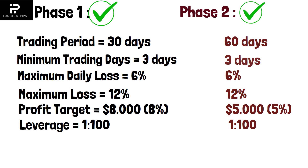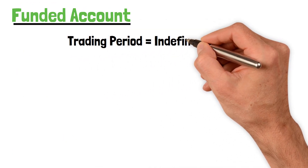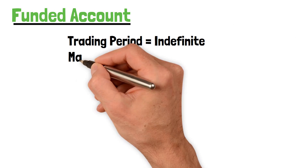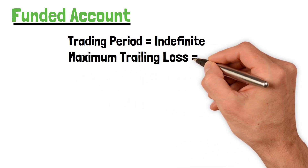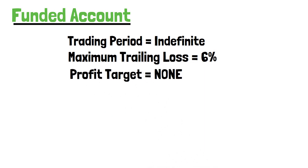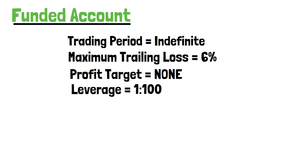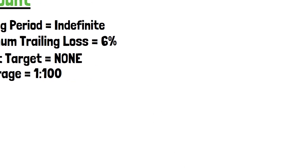Once you pass both phases, you will get a funded account in which the trading period is indefinite. This is where they are compromising — in the funded account, your stop loss will trail and it is 6%, trailing up to your initial balance. There is no profit target, and leverage is 1:200. In the Standard model, you will get your fee refunded with your first profit split.